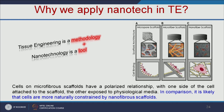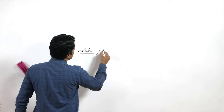The size of a cell is in the micrometer range. When you use a micropore or microfiber scaffold, the scale does not match. But when you use a nanofiber scaffold, a single cell can attach to thousands of nanofibers. In comparison, cells are more naturally constrained by a nanofibers scaffold. Cells on a microfiber scaffold have a polarized relationship, with one side attached to the scaffold and the other exposed to physiological media.